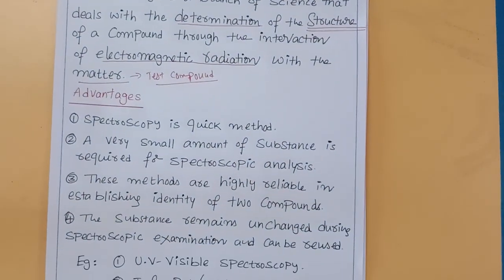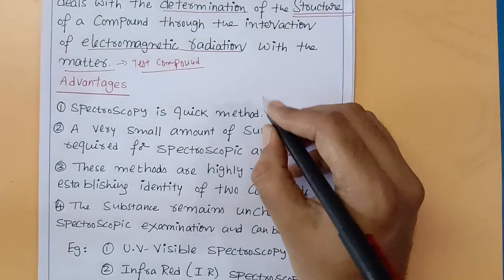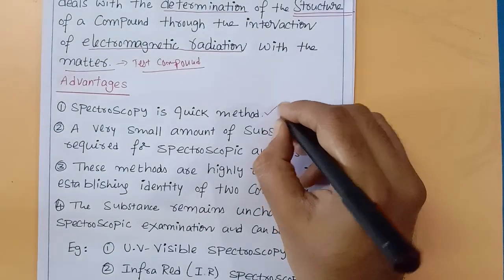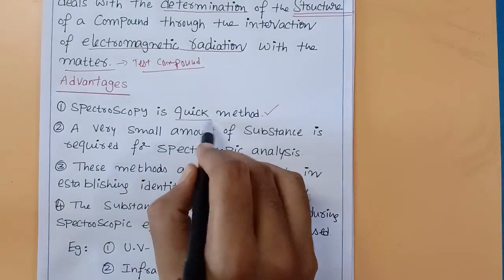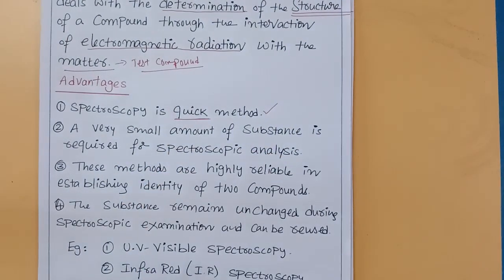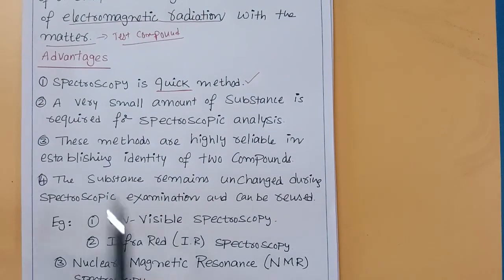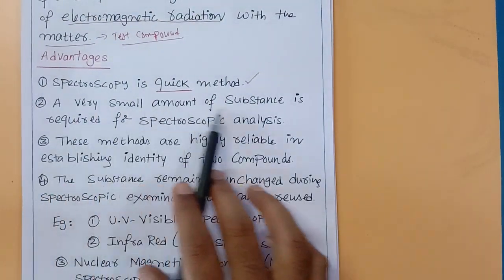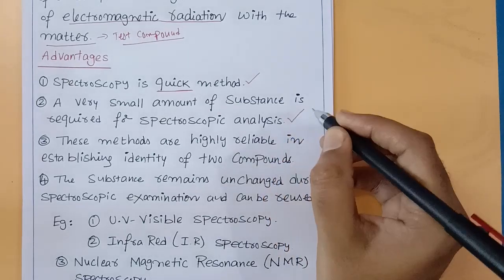Now, what are the advantages of spectroscopy over conventional methods? First, spectroscopy is a quick method — within a short time, you will get the results and can analyze the structure of the compound. Second, it requires a very small amount of substance for analysis.